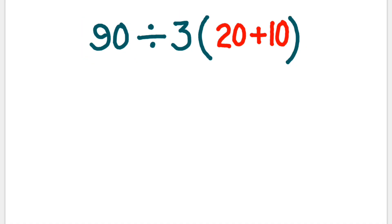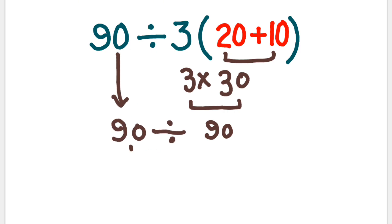First, 20 plus 10 equals 30. So 3 times 30 equals 90, and the first part is 90. 90 divided by 90 equals 1, which would be our answer. But remember, all this is incorrect because we have not followed the order of operations.